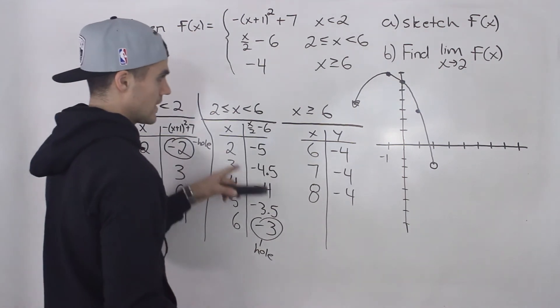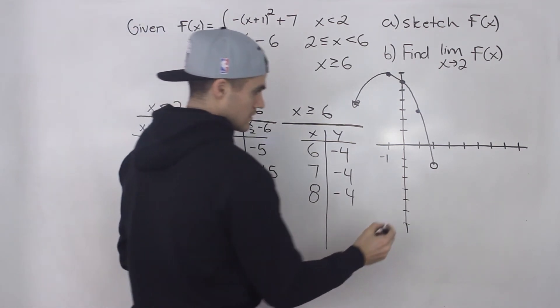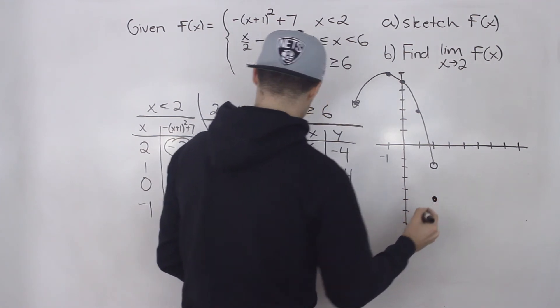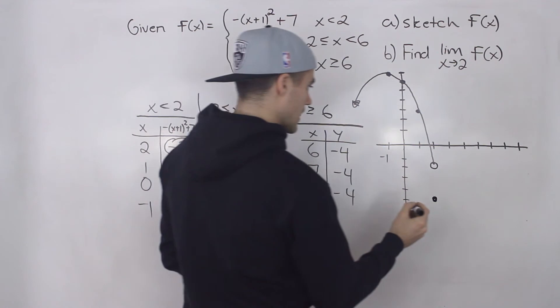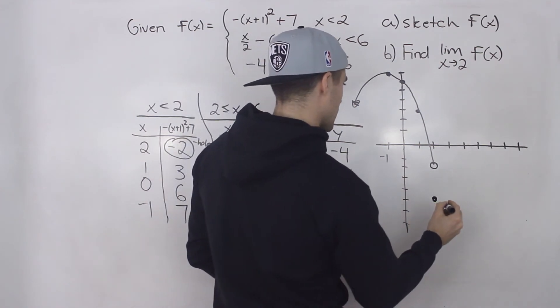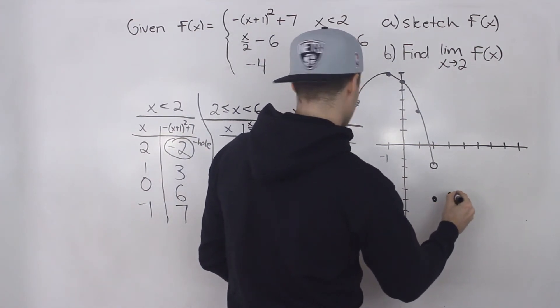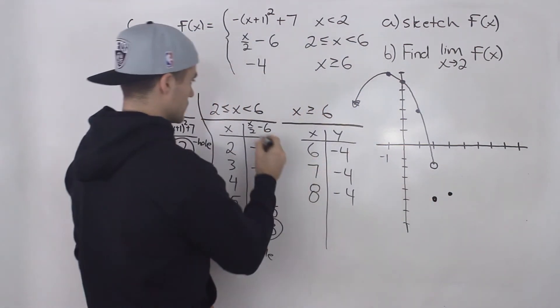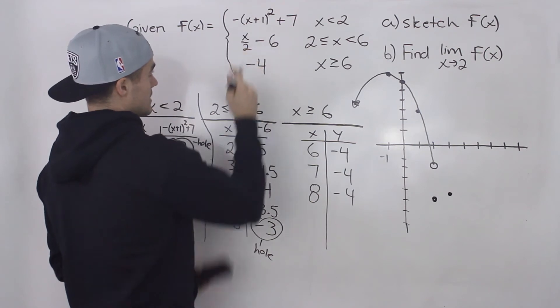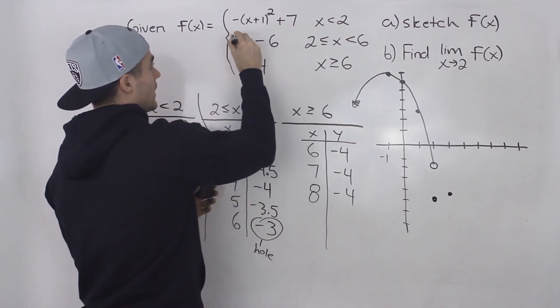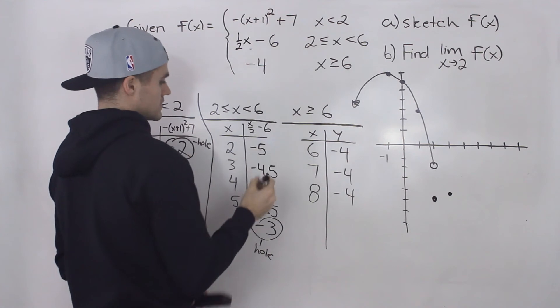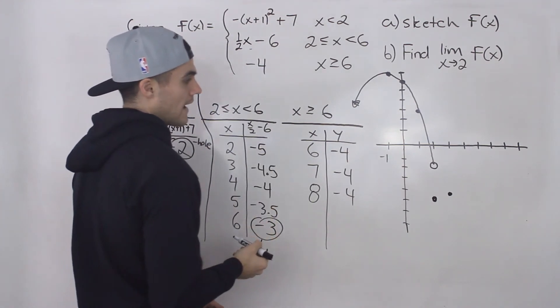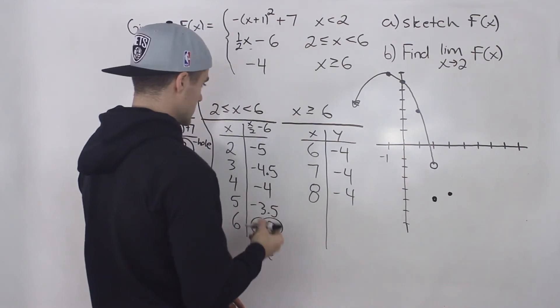So we got two and negative five. One, two, three, four, five. So that's down here. And then we got three and negative 4.5. So that would be like here. This is just going to be a line, right? x over two, we can rewrite this as instead of x over two, it's just going to be like one half x. So notice how all of the y values are going up by a half.